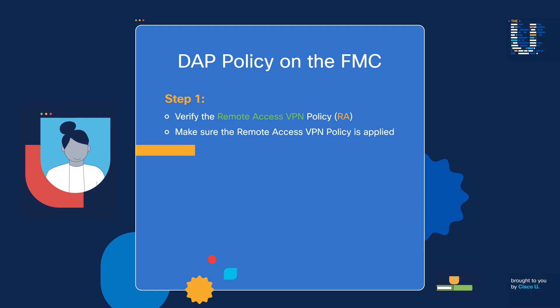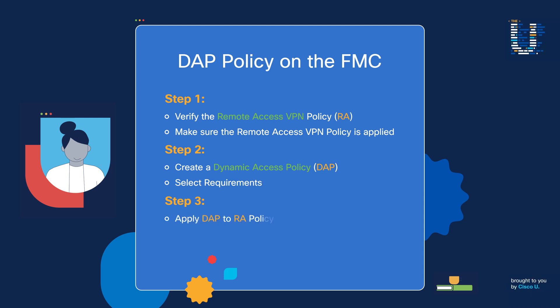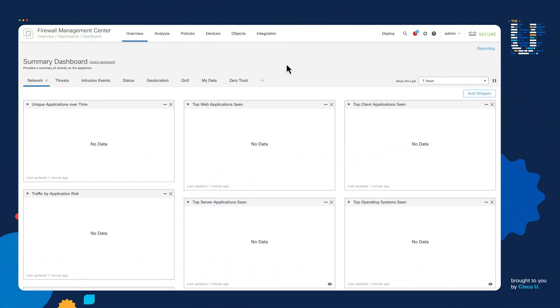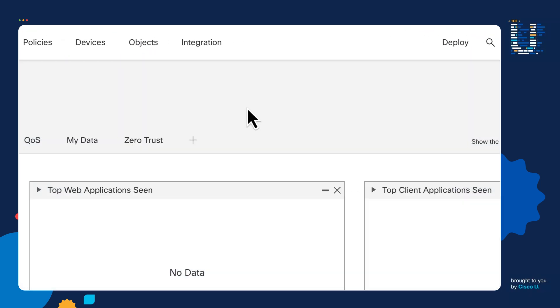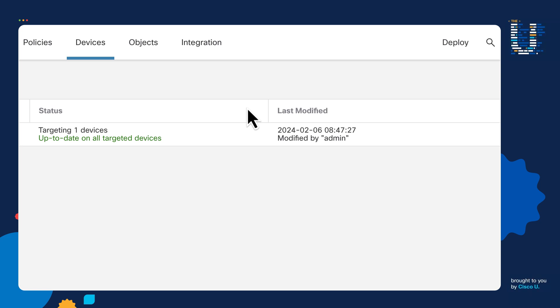Once that's verified, we can go on to step number two, where we're going to be creating our first Dynamic Access policy. Once we create that policy, we will then set requirements that the user needs to follow in order to gain access into the network. On step number three, we will take that Dynamic Access policy and associate it to the Remote Access VPN policy. Once we apply the changes to the relevant devices, we can then start using the posturing we've configured to restrict access. The first thing we need to do is go under Devices and Remote Access and verify that we have an active Remote Access VPN policy applied to all the relevant devices.